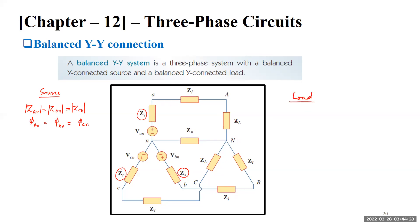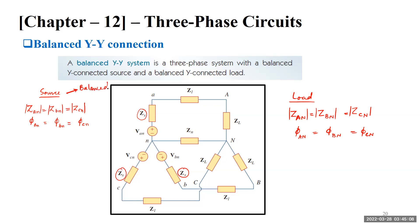Similarly, for the load, all phase impedances must be equal both in magnitude and phase: Z_AN = Z_BN = Z_CN. If the source and load satisfy these conditions, then our source is a balanced source and our load is a balanced load. Consider a balanced Y-Y connection where the source is balanced, the load is balanced, and they are connected by a transmission line.